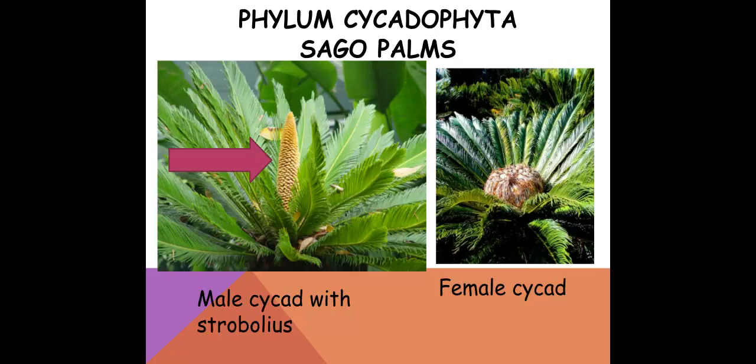Here's an example of our cycads, or sago palms. These are very popular in landscaping and yard decorations here in the Lowcountry. You can see this strobilus, this cone structure, growing out of the middle of a sago palm. The female sago palm is on the right — the wind will blow the pollen to that female sago palm where the seeds are housed.